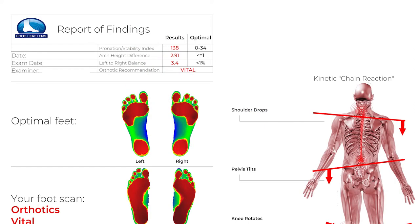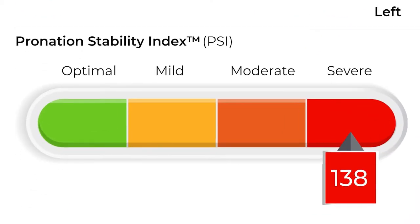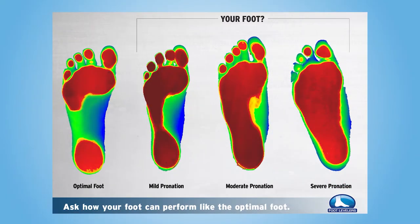When reading the report of findings, let's take a moment to understand where a lot of the information is coming from. The pronation stability index score is a result of how much arch loss is present in both feet combined. It represents low points on the foot, contact with the glass, and essentially the arch loss found in the plantar vault area. When we think about our pronation stability index, we want to look at four distinct categories: optimal, mild, moderate, and severe.